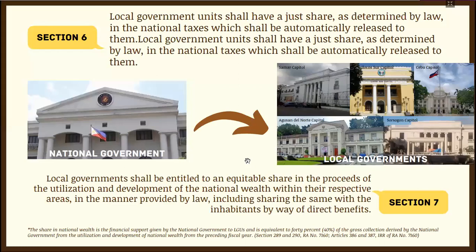According to Section 6, LGUs shall have a just share, as determined by law, in national taxes, which shall be automatically released to them. Beyond their own local revenues from taxation, LGUs also receive a share from national government collections.